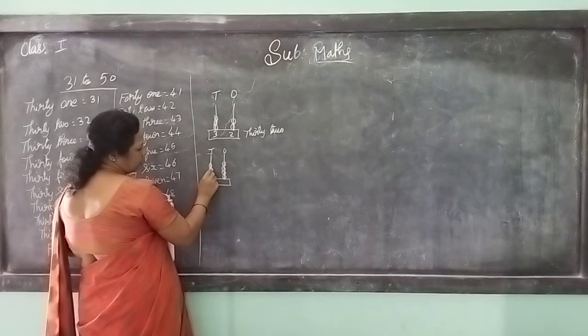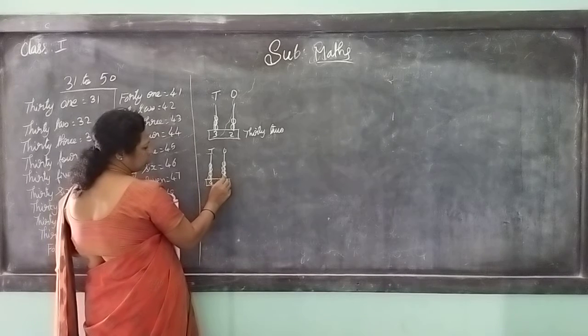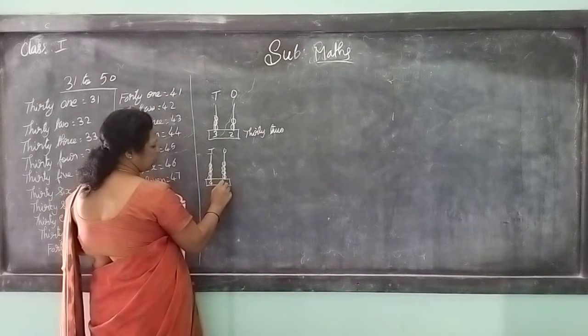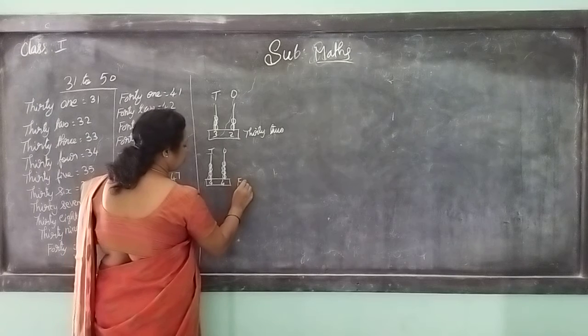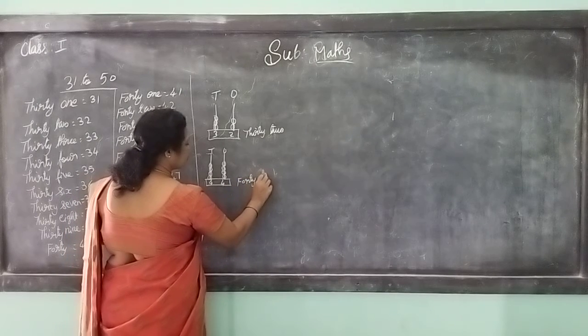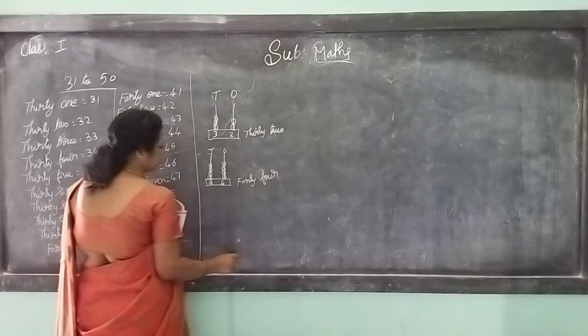How many? 1, 2, 3, 4 tens, and 1, 2, 3, 4 ones. 4 tens and 4 ones - how much? 44 - F-O-R-T-Y F-O-U-R.